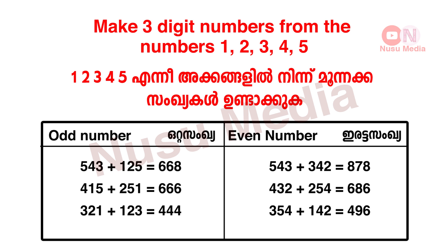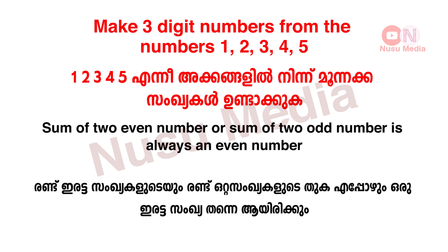Continuing the additions: 320 plus 120 is 444. 534 plus 342 is 878. 432 plus 254 is 686. 354 plus 142 is 496. The sum of two even numbers or the sum of two odd numbers is always an even number.